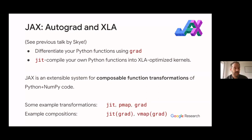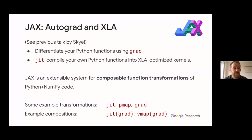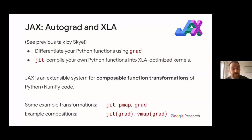Here are two example compositions: you can JIT grad, which is what you usually do for standard gradient descent, or you can vmap grad to get per-example gradients very efficiently — doing it naively would require a batch size of one, which is slow.